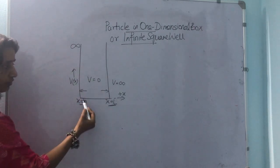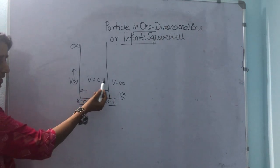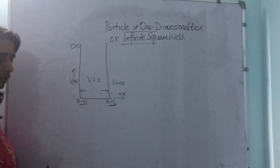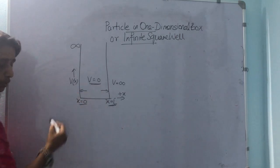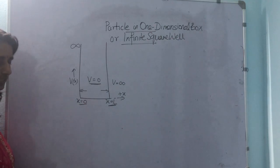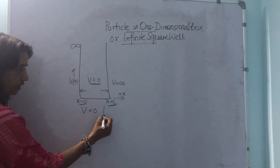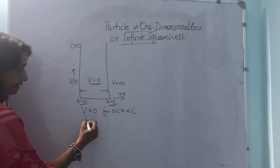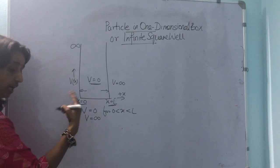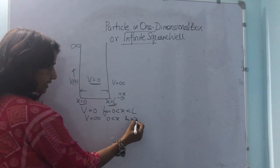Let the walls of this infinitely deep well be hard so that the particle does not lose energy when bouncing back from the walls, and velocity is so low that we cannot ignore relativistic considerations. Let V be equal to 0 inside the box. The potential is equal to 0 for x between 0 and L, and potential is equal to infinity outside the box.